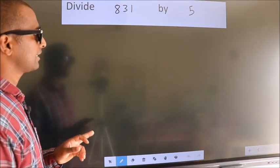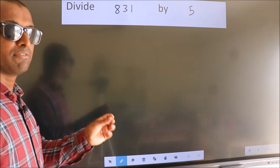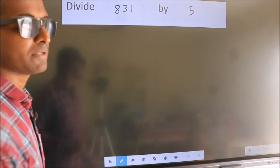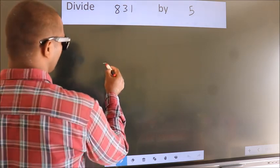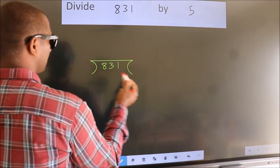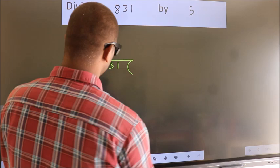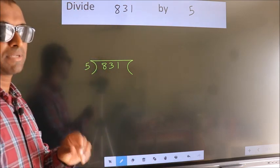Divide 831 by 5. To do this division, we should frame it in this way. 831 here, 5 here. This is your step 1.